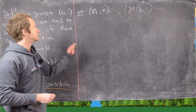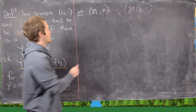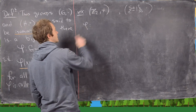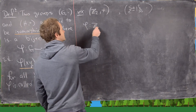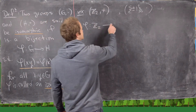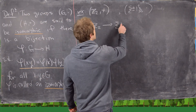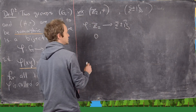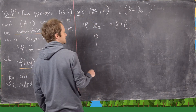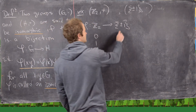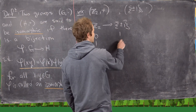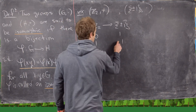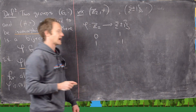We need to define a map from Z₂ to {+1, -1}. We know Z₂ has two elements: 0 and 1, and {+1, -1} also has two elements: +1 and -1.